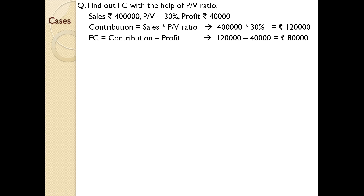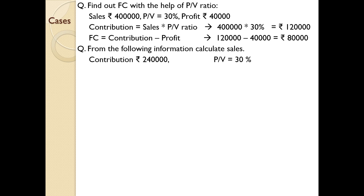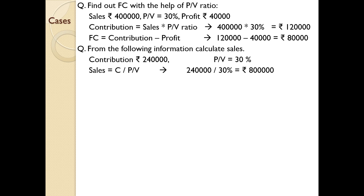It does not mean that you have to use a particular equation for any particular item; we might use different equations for finding different items. Next: from the following information, calculate sales. Contribution is given, PV ratio is given. We know that PV ratio equals contribution by sales, so the same equation can be altered: sales equals contribution by PV ratio. Since both contribution and PV ratio are given, you can directly find the value of sales.